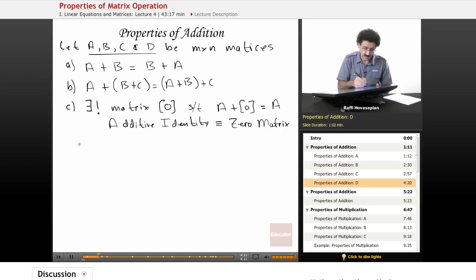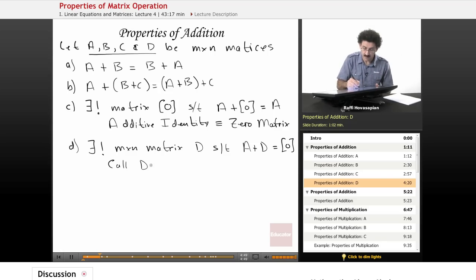Okay, and our final, okay, once again our little symbol, there exists a unique M by N matrix, we'll call it D, such that, where should we put, let's put it over here, A plus D is equal to the 0 matrix. Call D minus A. So we'll refer to D as minus A. In other words, it's just the reverse.